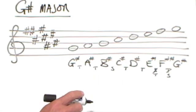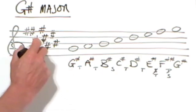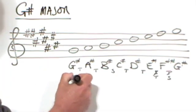Okay, so let's move on. Here's our key of G sharp major with its eight sharps. Let's number the notes.